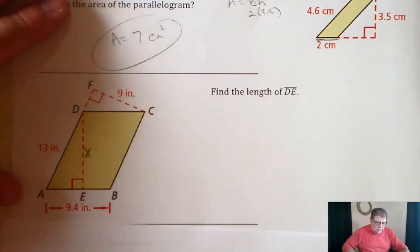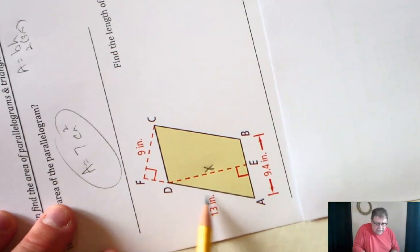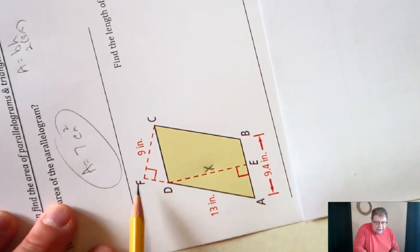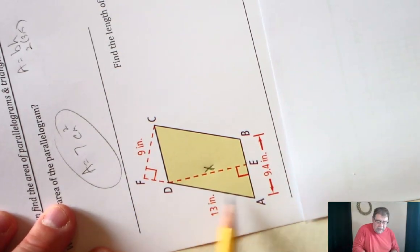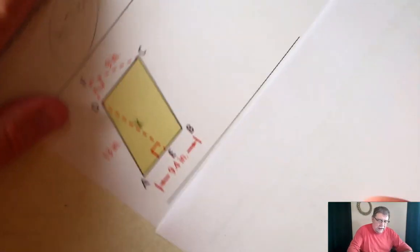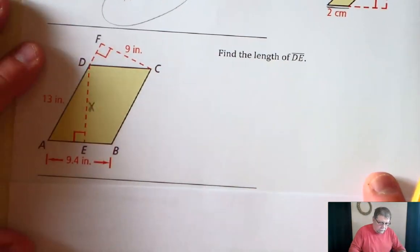So if you turn it this way, you can see a little bit easier that we could call this distance 13, the base, and 9 is perpendicular to it. We could call that the height. So we're going to take the 13 times the 9, and we're going to figure out the area of the parallelogram.